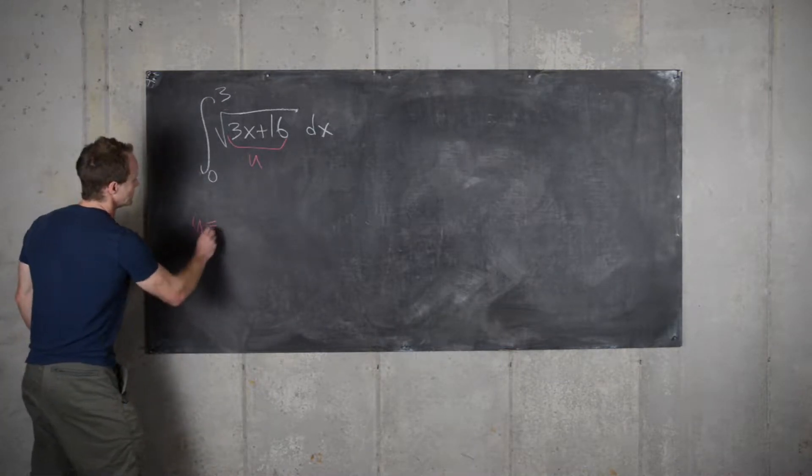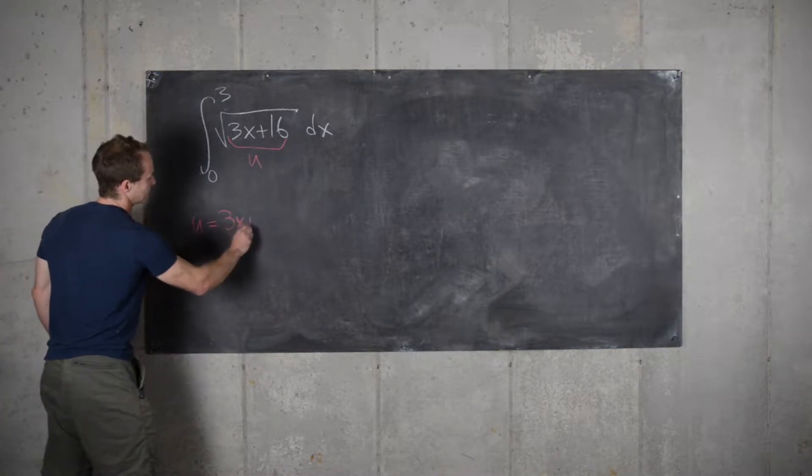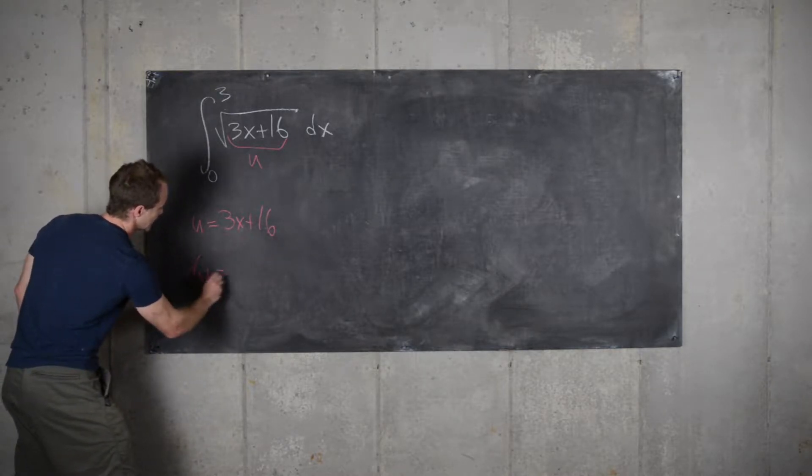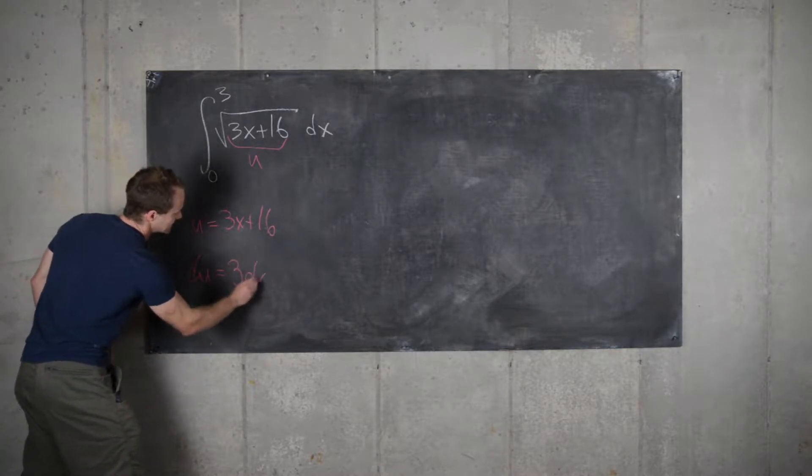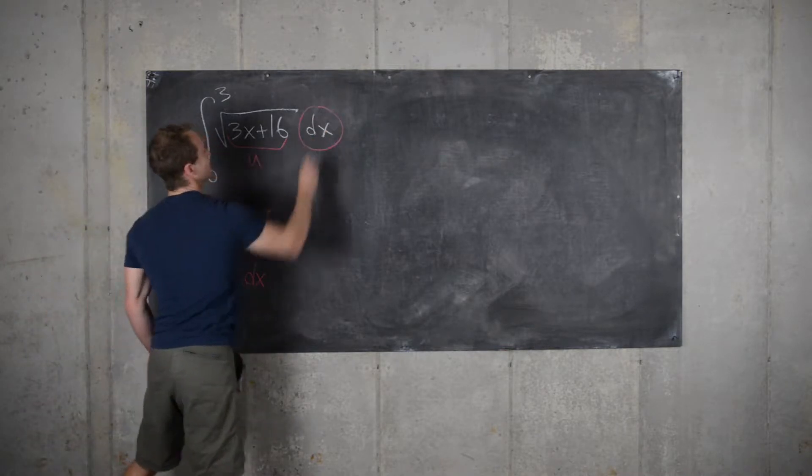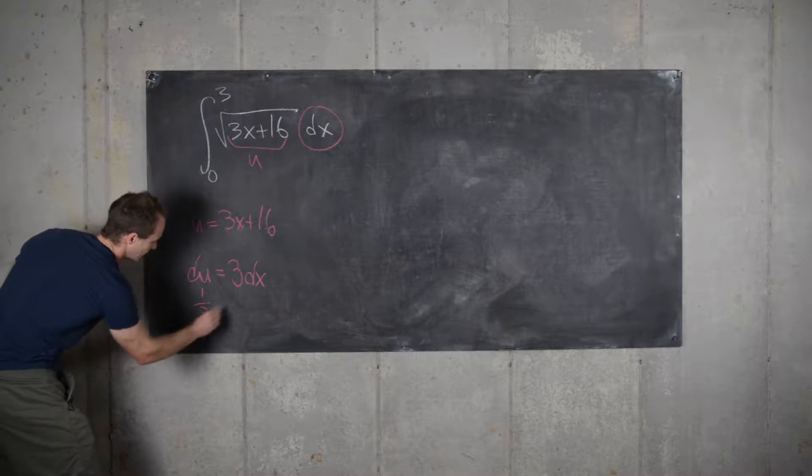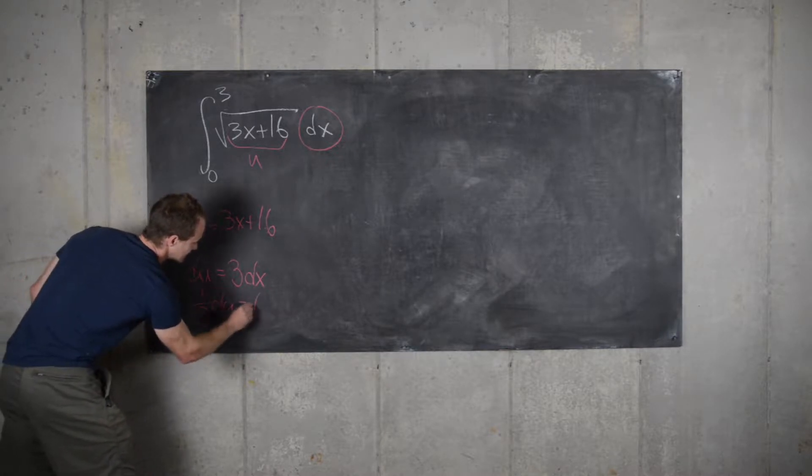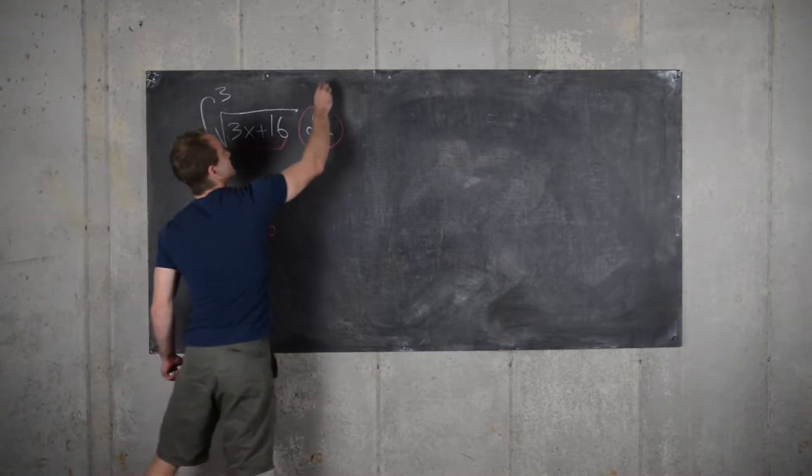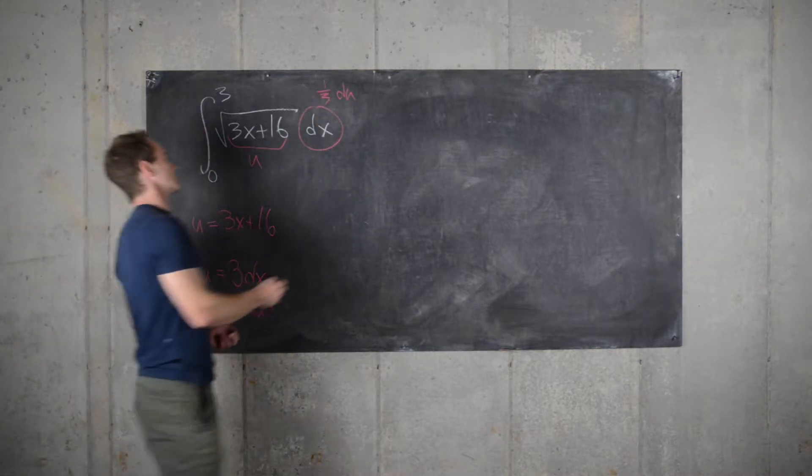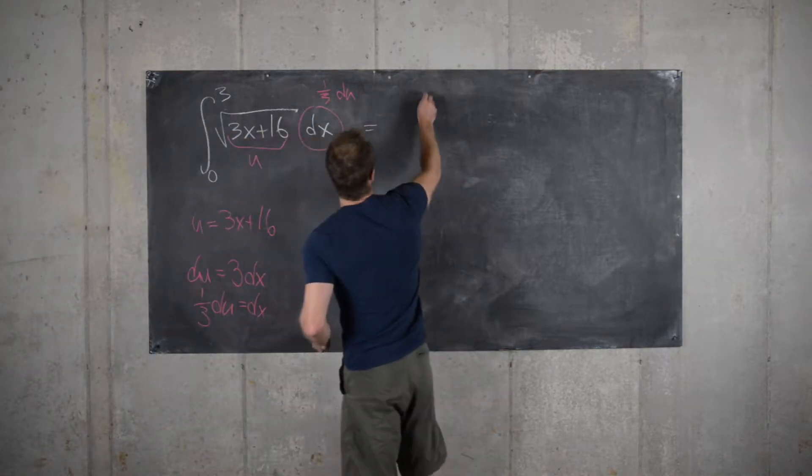If we let u equal 3x plus 16, that gives us du equals 3dx. But now notice we have just a single dx, so that means we can solve and we'll get one-third du equals dx. So we can say that this is one-third du.